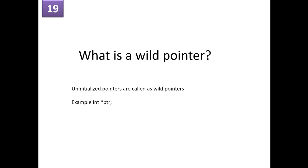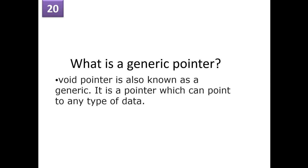What is a wild pointer? Uninitialized pointers are called wild pointers. For example, 'int *ptr' — ptr is assigned a junk value, which makes it a wild pointer and it is very dangerous. Wild pointers are also known as generic pointers — a pointer which can point to any type of data.